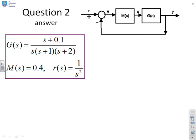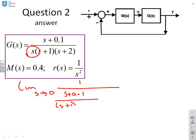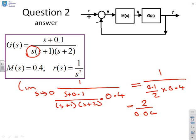Next example. Again, you'll notice we've got a single integrator, so I'm going to go straight to writing the formula. We want the limit as s goes to zero of one over (s+0.1) over (s+1)(s+2), so you'll see I've just cancelled the integrator, and then times M, which is 0.4. As we let s go to zero, what's this going to give? One over 0.1 over two times 0.4 or two over 0.04, which is 50. That's quite a big offset.